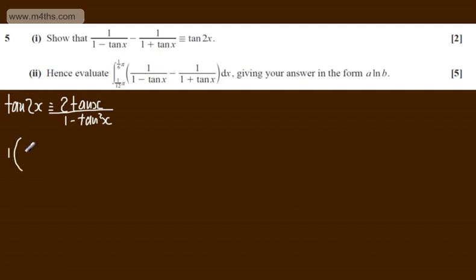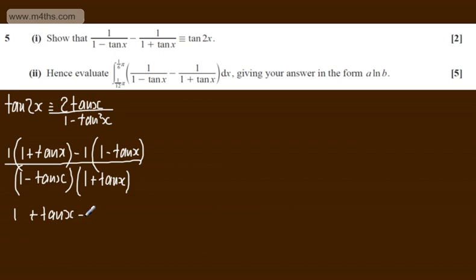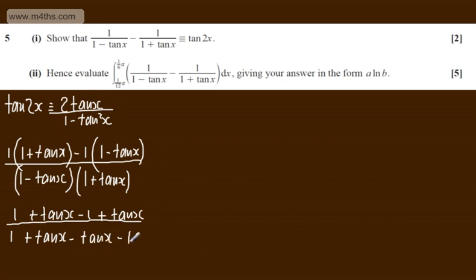In the numerator, we'll have 1 lot of (1 plus tan x) minus 1 lot of (1 minus tan x), all over the common denominator, which is the product of (1 minus tan x) and (1 plus tan x). Multiplying out: the numerator gives 1 plus tan x, minus 1, minus minus tan x, which is plus tan x. The denominator gives 1 plus tan x minus tan x minus tan squared x.